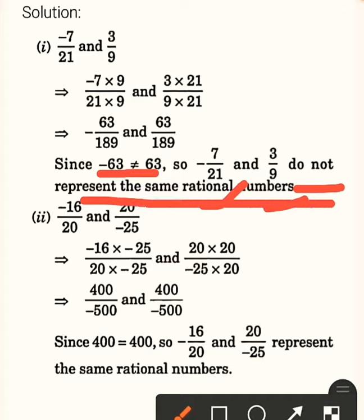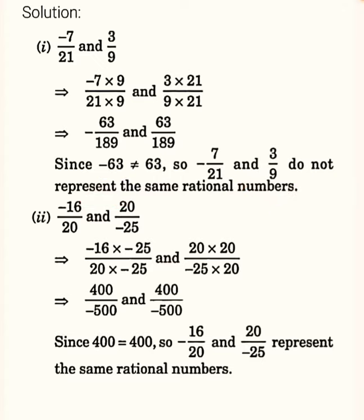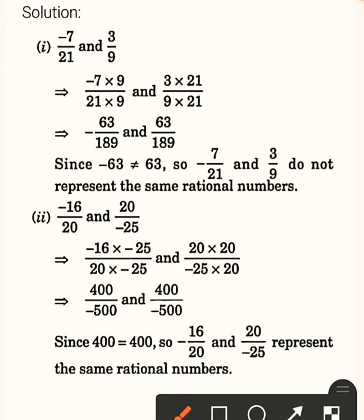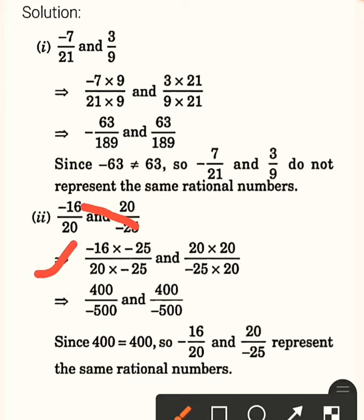By cross multiplication, you can easily compare two rational numbers. Let us see the second one. In the second one, minus 16 upon 20 and 20 upon minus 25 are given. Again, we will multiply minus 25 with 16 for the first part.